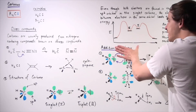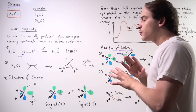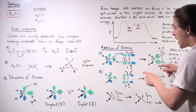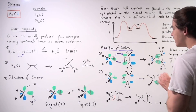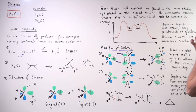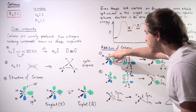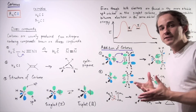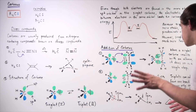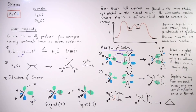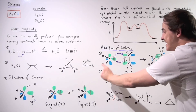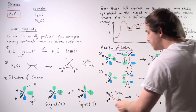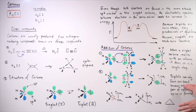So whenever carbene addition to an alkene occurs with no stereochemical rearrangement — the stereochemistry of the product is the same as that of the alkene — we can assume we were dealing with the singlet. But if the alkene differs in stereochemistry compared to the final cyclopropane, then we can assume the initial carbene was a triplet, because only the triplet proceeds through an open intermediate allowing stereochemical rearrangement.